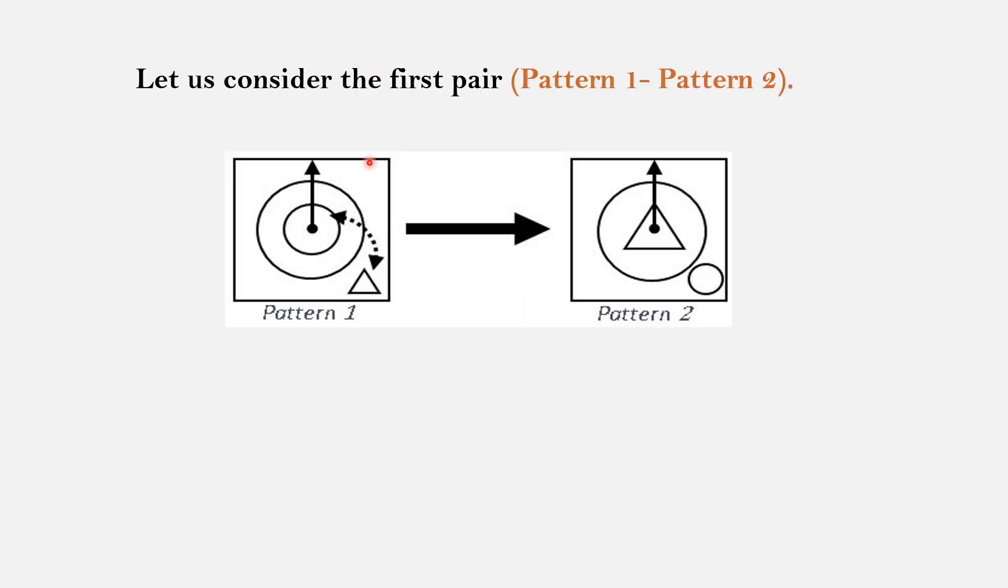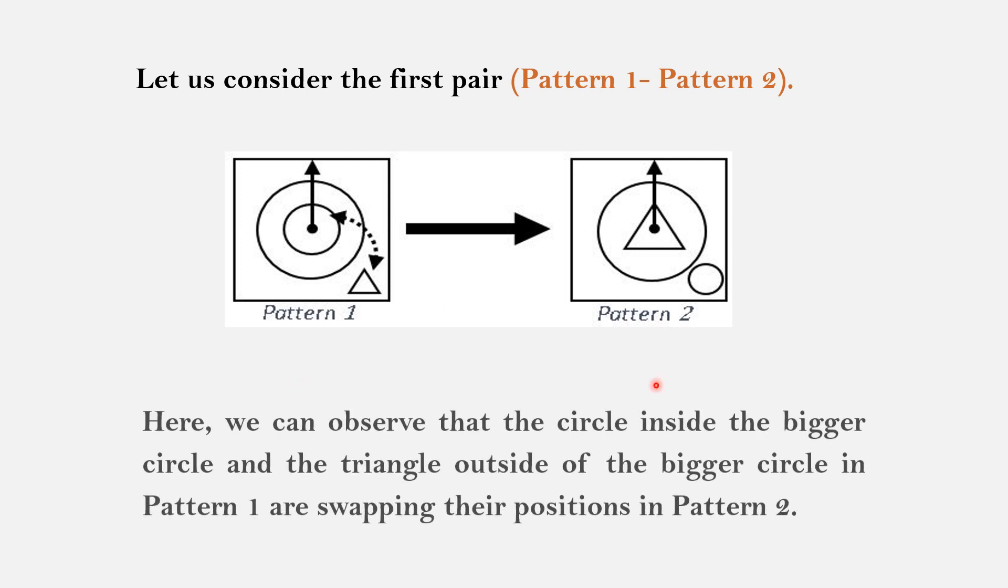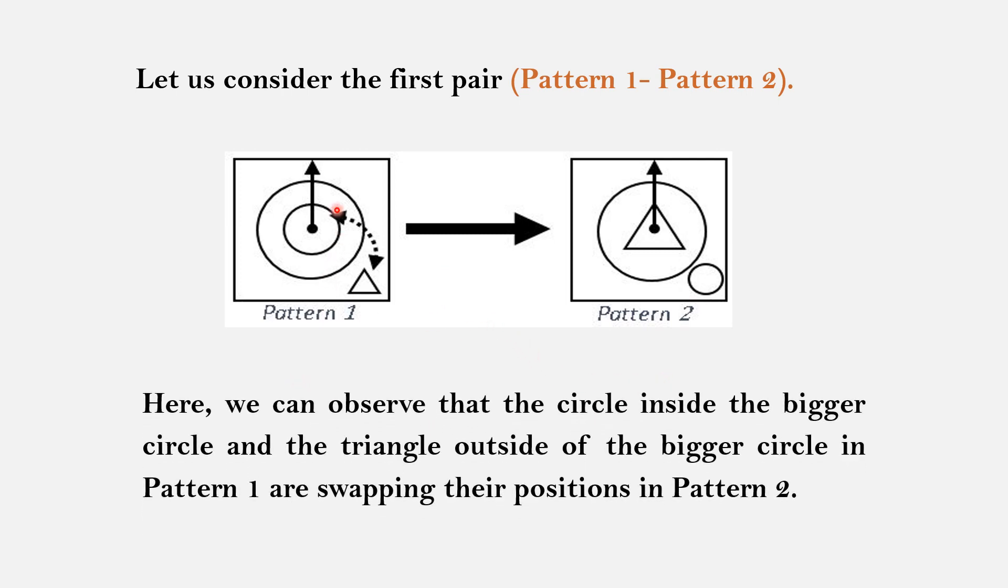Let us consider the first pair that is pattern 1 and pattern 2. Here we can observe that the circle inside the bigger circle and the triangle outside the bigger circle in pattern 1 are swapped to form pattern 2.